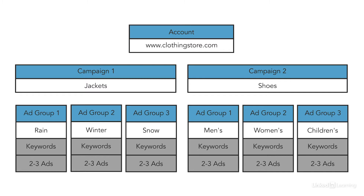Under jackets, you might have rain, winter, and snow. And under shoes, you might have men's, women's, and children. This is how you can organize campaigns by category.